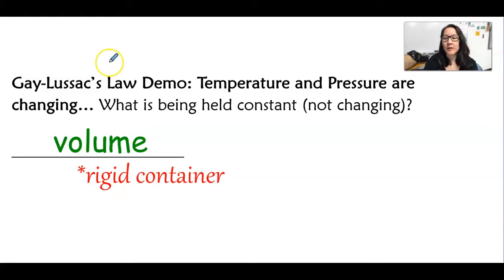The next law is called Gay-Lussac's law, and that is temperature and pressure when volume is being held constant. So when you see words like rigid container, that means that the volume can't change. It's like a steel container, or it's made of metal, or it's something that's not flexible like a balloon.